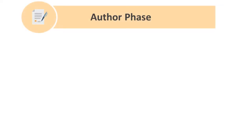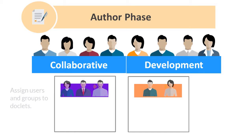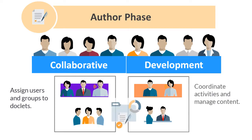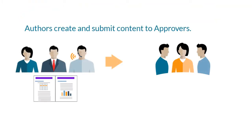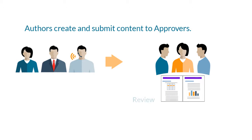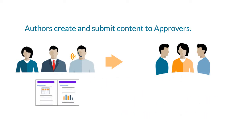An author phase is ideal for collaborative content development, because you can assign multiple users and groups to doclets as authors and approvers given their responsibilities, coordinate their activities, and manage their content. Authors add content and then submit their doclets to the assigned approvers. Approvers can review, take ownership to modify content, approve and reject doclets. If rejected, doclets return to the author for updates.